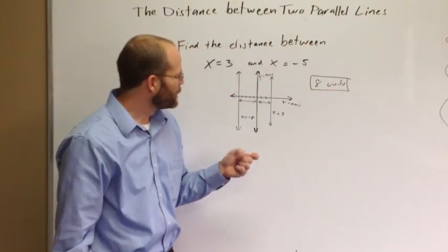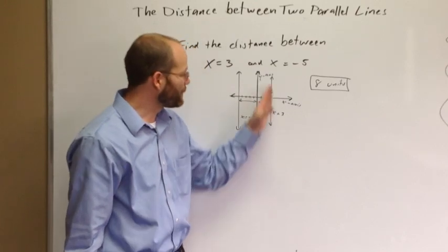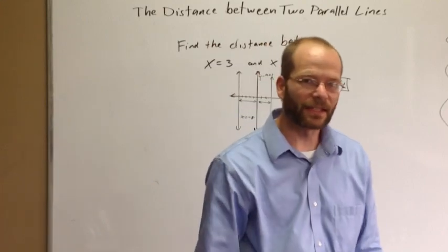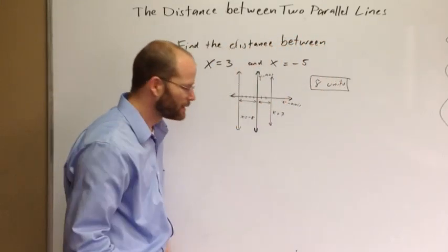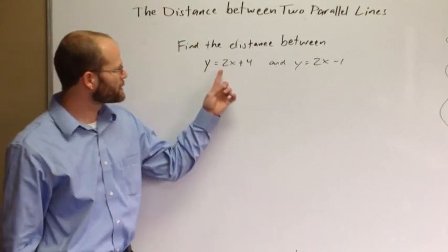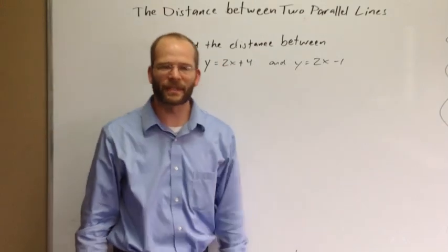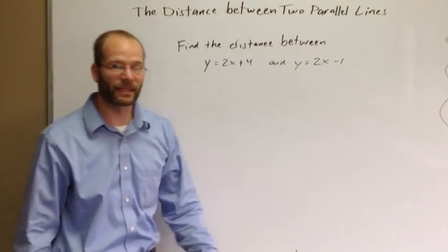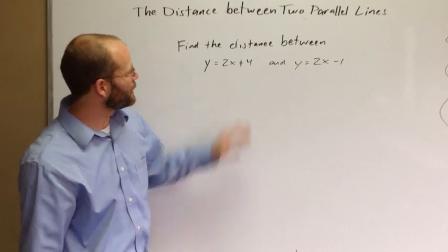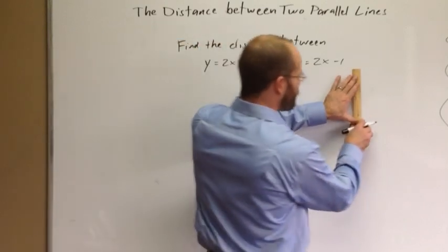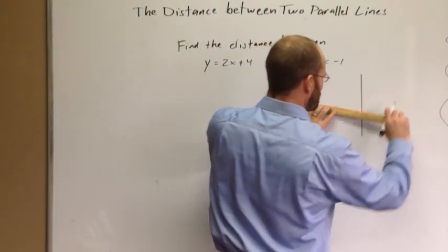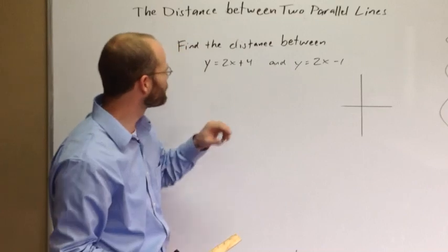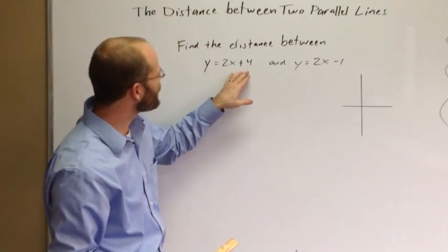Unfortunately, not all lines that are parallel in the coordinate plane happen to be vertical or horizontal, so sometimes we actually have to run the math. Let's take a look at that in a different example and see how we do this algebraically. The first thing you should notice is the slope is the same — and it has to be, because if the slope were different they wouldn't be parallel lines. I'm just going to put them in the coordinate plane so we can get a sense of what we're looking at. This is just a sketch to get a mental picture.